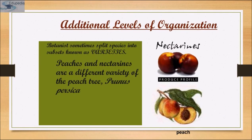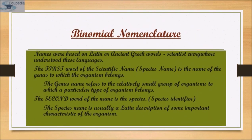These are additional levels of organization. Botanists sometimes split species into subsets known as varieties — for example, peaches and nectarines are different varieties of the peach tree, Prunus persica. In binomial nomenclature, names were based on Latin or ancient Greek words that scientists everywhere understood. The first word of the scientific name is the genus name, referring to the relatively small group to which the organism belongs. The second word is the species identifier.